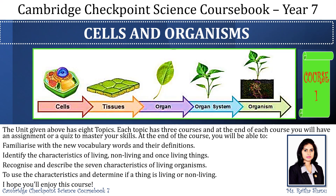Unit 2: Cells and Organisms. The unit given above has 8 topics. Each topic has 3 courses, and at the end of each course, you will have an assignment or a quiz to master your skills.